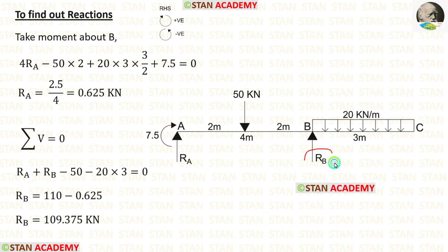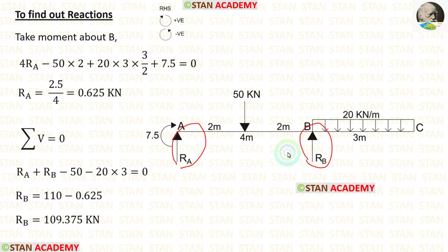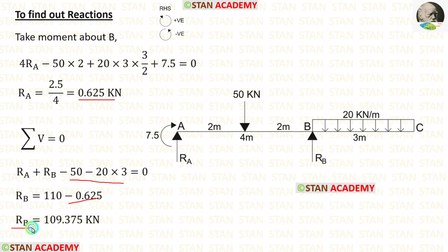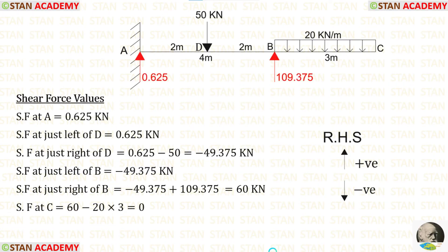Now to calculate RB, we apply the equilibrium condition sigma V equals 0. RA and RB act upwards and are positive, while the point load of 50 kN and UDL of 20 kN per meter act downwards and are negative. Substituting the already calculated value of RA, we get the value of RB.